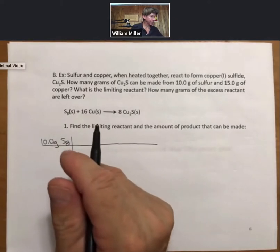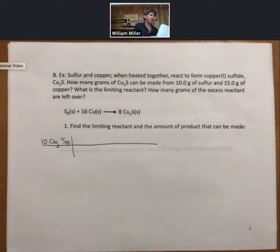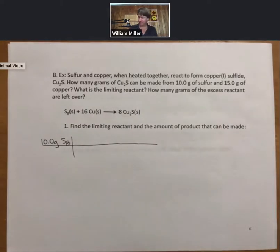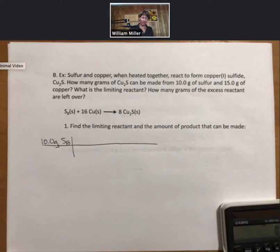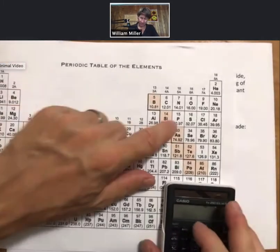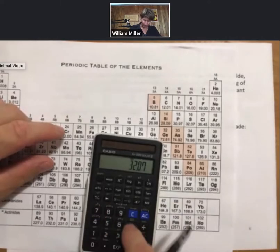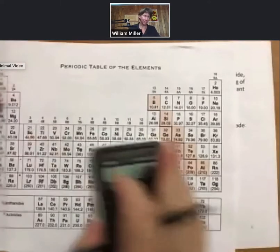Now, for grams of sulfur, I need to look at my periodic table, which I happen to have handy right here. Sulfur, 32.07, so for S8 that's 256.56 grams per mole.